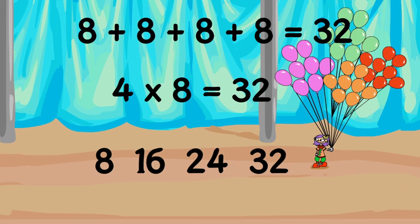You can see that multiplication makes adding equal groups fast and easy.